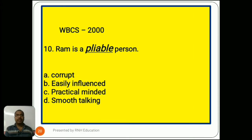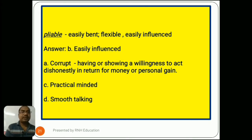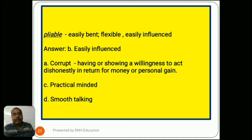Question number 10, from the year 2000: 'Ram is a pliable person.' Options are A) corrupt, B) easily influenced, C) practical-minded, D) smooth talking. Pliable means easily bent, flexible, easily influenced. So the answer is B) easily influenced. Option A, corrupt, means having or showing a willingness to act dishonestly in return for money or personal gain. Options C and D, practical-minded and smooth talking, are common words that need no further explanation.